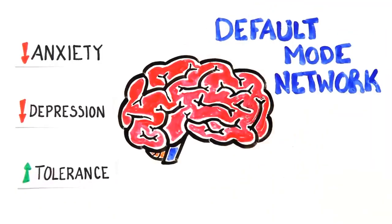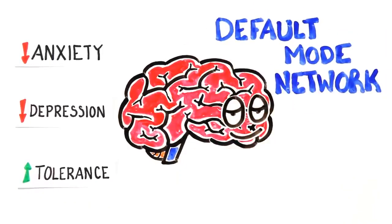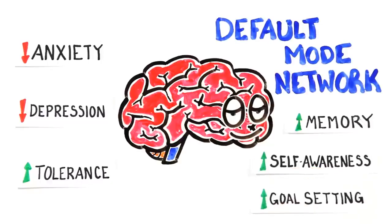The default mode network, in particular, is activated when one's mind is at rest and not focusing on the outside world, and has been found to improve memory, self-awareness and goal-setting.